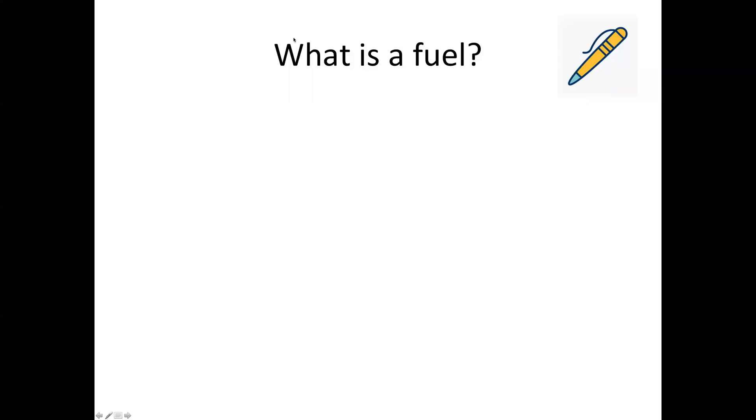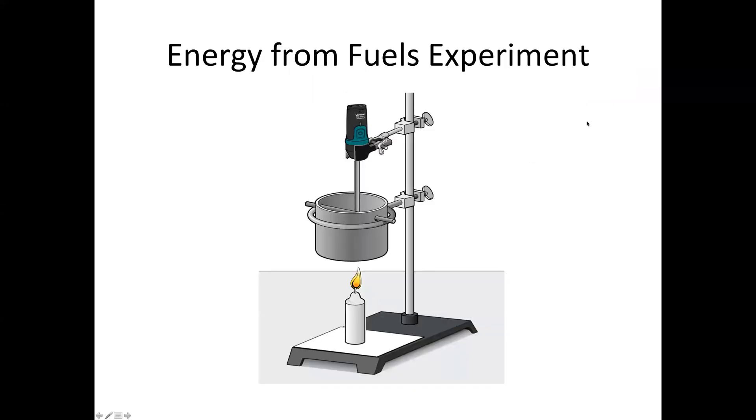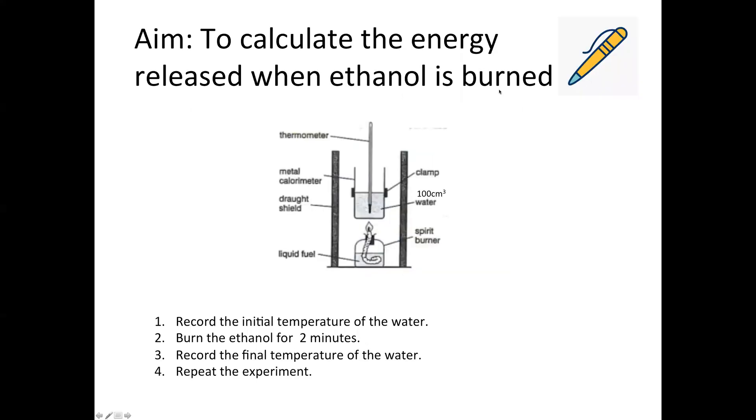So we'll move on to the next slide, the actual experiment. Now this is an image of how the experiment's set up. So basically what happens is in this metal can, you put in a known volume and mass of water. We then take the temperature of the water at the start, heat the water up with our fuel, and then measure the temperature at the end. How much heat the water has absorbed from our fuel source can then be used to calculate the heat energy released. So the temperature change of the water is what we use to calculate the heat energy that the fuel has released.